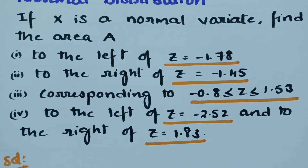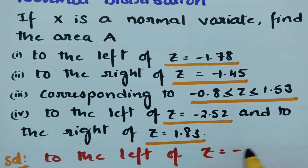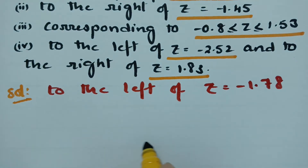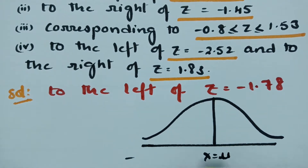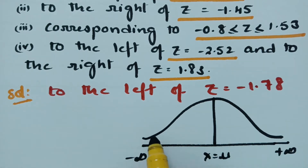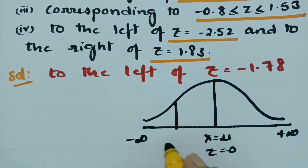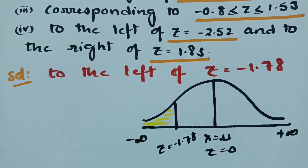For the first question, we need the area to the left of z = -1.78. Looking at the normal area curve, x = mu is at the center, extending to minus infinity on the left and plus infinity on the right. Here z = 0 is at center and z = -1.78 is towards the left side — we need the area in that left region.